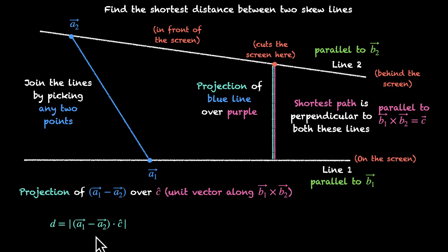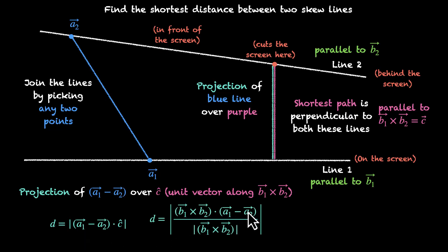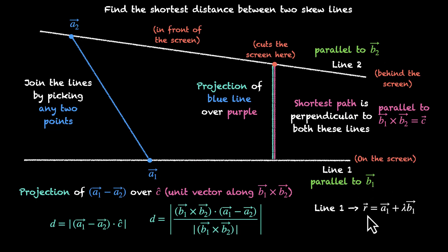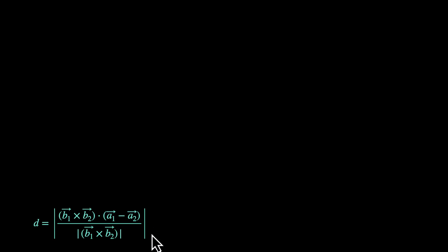So the distance is the magnitude of the dot product of (A1 minus A2) with C-hat. Since C-hat equals (B1 cross B2) divided by its magnitude, we can write: D = |(A1 − A2) · (B1 × B2)| / |B1 × B2|. This is the shortest distance between the two lines, where line 1 passes through A1 and is parallel to B1, and line 2 passes through A2 and is parallel to B2, with equations R = A1 + λB1 and R = A2 + λB2.